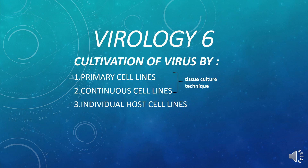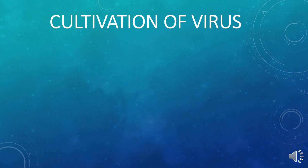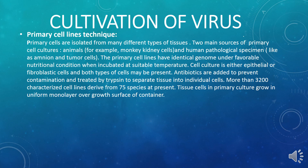Last but not the least, fourth is the bird embryo technique. In the primary cell lines technique, the primary cells isolated are from different types of tissues, for example monkey kidney cells, amnion, and tumor cells. Primary cell lines possess an identical genome which provides favorable and nutritional conditions for viral cultivation when incubated at a suitable temperature.